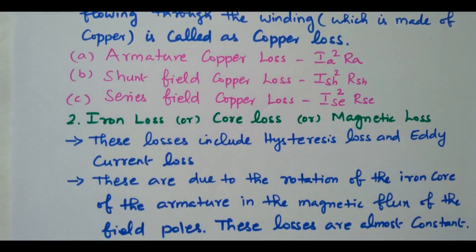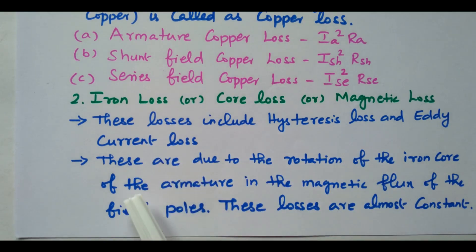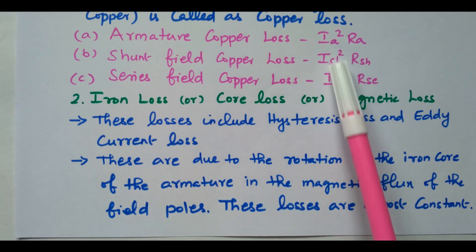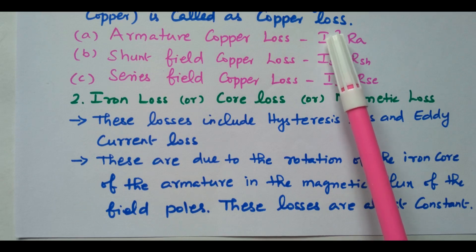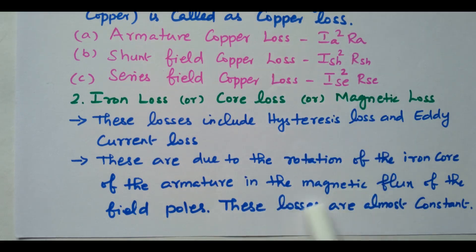Iron loss is due to loss in the core. These losses include hysteresis loss and eddy current loss, due to the rotation of the iron core of the armature in the magnetic flux of the field pole. These losses are almost constant. Copper loss is a variable loss — when the armature current increases, the losses also increase. But iron loss, including eddy current loss, is a constant loss; it does not change with respect to the current.